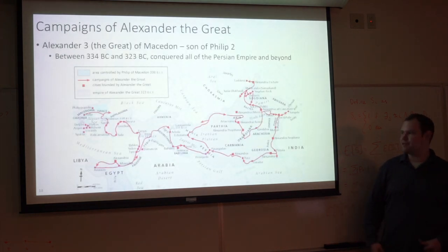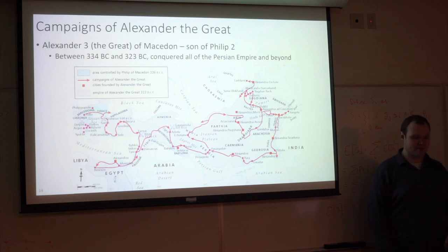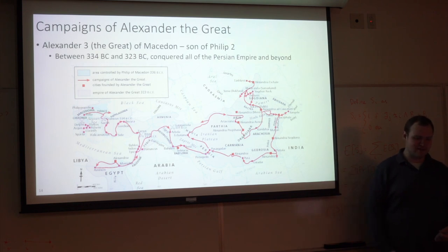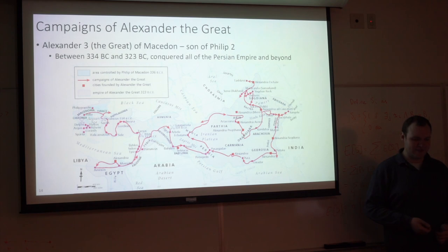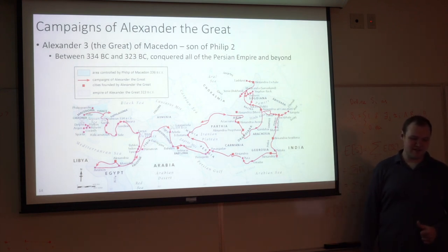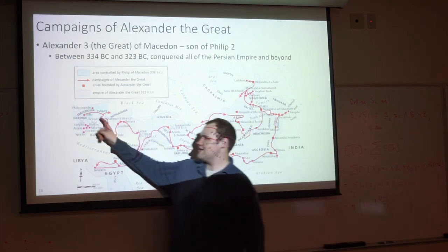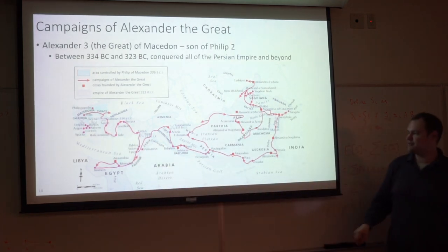This force was used by Philip II but most famously was used by Alexander the Great — technically Alexander III of Macedon, though pretty much everybody forgets about the first and second. Alexander was the son of Philip II, and between 334 and 323 BC — just 11 years — he conquered pretty much the entirety of the Persian Empire. This map shows the empire that Alexander ended up conquering compared to the Macedonian Empire he inherited, with his primary campaign drawn out.